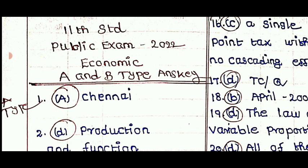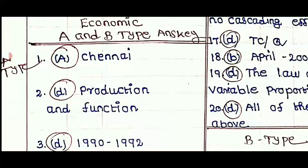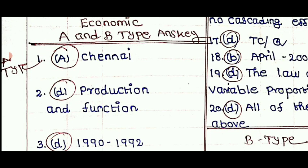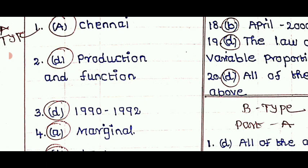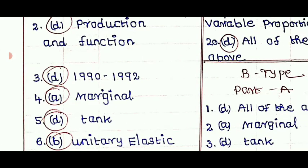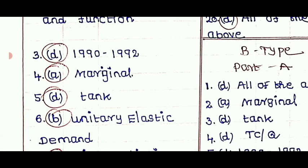This is option A. Question number 1 option A, Chennai. Question number 2 option D, Production and Function. Question number 3 option D, 1990-1992. Question number 4 option A, Marginal.